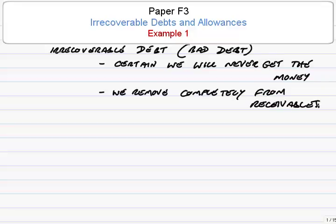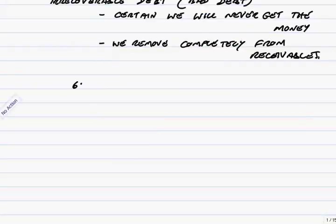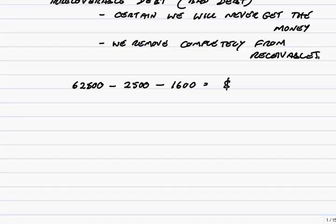We've got receivables at the moment of $62,500. Let's remove A ($2,500) and B ($1,600), which leaves us with a balance on receivables of $58,400. They completely disappear. And if there was nothing else in the question, then on the balance sheet we'd show current assets, receivables, $58,400. However, let's carry on.